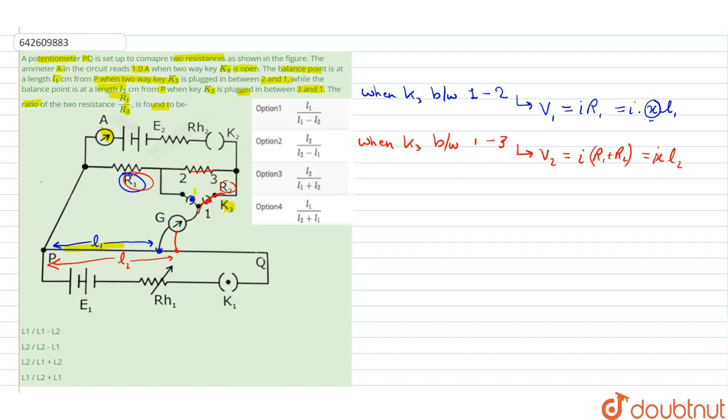Now, we see that R1 upon R1 plus R2 ratio can be given by L1 upon L2 as from these two conditions. Therefore, if we take the reciprocal of it we will write R1 plus R2 upon R1 is equal to L2 upon L1.